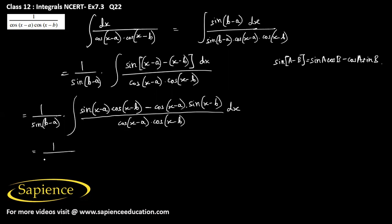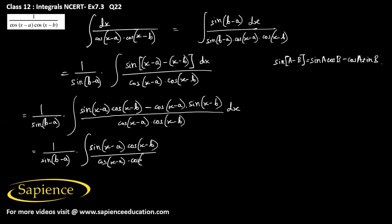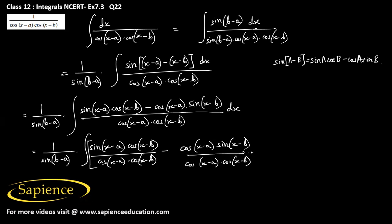So this will be equal to 1 by sin(b minus a) into the integral. We can split this as sin(x minus a)cos(x minus b) minus cos(x minus a)sin(x minus b), divided by cos(x minus a) into cos(x minus b). Here cos(x minus b) cancels, and cos(x minus a) cancels.